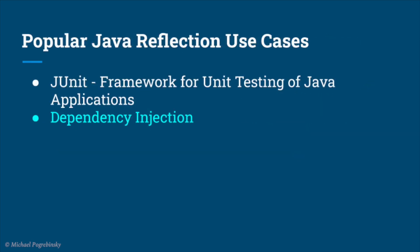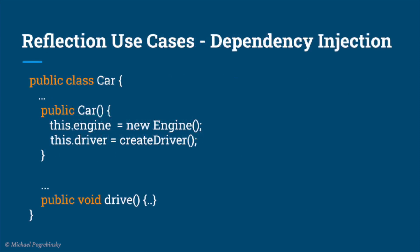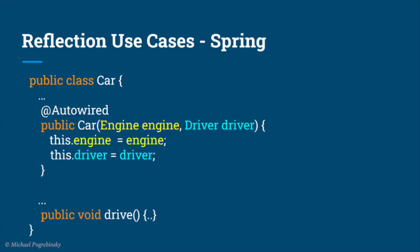Another class of very heavy users of Reflection are dependency injection and configuration frameworks like Spring, Google Guice, and others. For example, if we have the class Car that requires an engine object and a driver object, without dependency injection we would have to know how to create those dependencies while creating an object of type Car. That tightly couples our Car class to the details of creating all of its dependencies. Using a dependency injection framework like Spring, we can define our Car class while delegating the creation of its dependencies to other places in our code, and Spring, using Reflection, would automatically wire our dependencies to our dependent class Car.